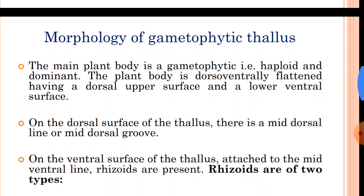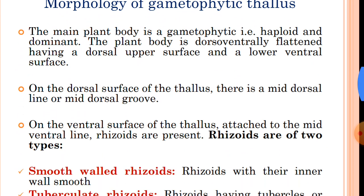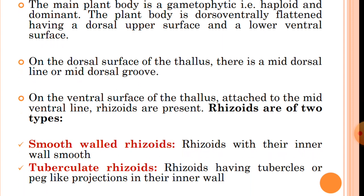The morphology of the thallus: the main plant body is gametophyte, that is haploid and dominant. The plant body in Riccia is dorsoventrally flattened, having a dorsal upper surface and a lower ventral surface. On the dorsal surface of the thallus there is a mid-dorsal line or mid-dorsal groove. On the ventral surface of the thallus, attached to the mid-ventral line, rhizoids are present.